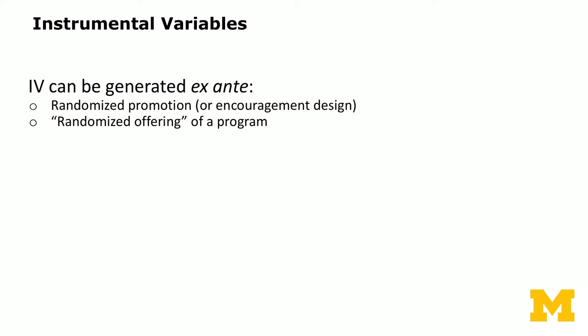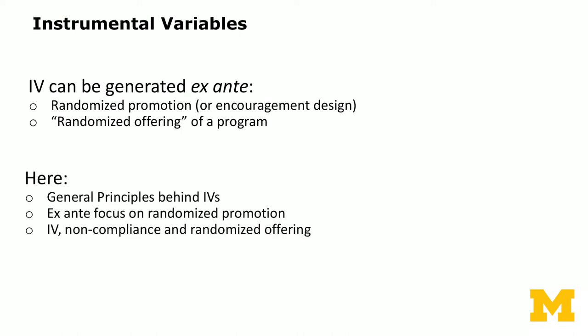I sometimes use the term 'instrument' — this is common practice, so if you listen to other lectures you'll find the same thing. One way to account for non-compliance is to use the IV regression approach. IV can be generated exactly before you start the experiment. For example, you can randomize promotions using an encouragement design, or use a randomized offering of a program. Here we focus on the randomized promotion approach and how IV can be used to deal with non-compliance.